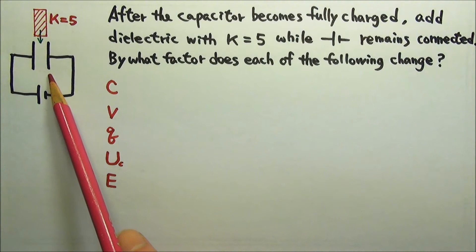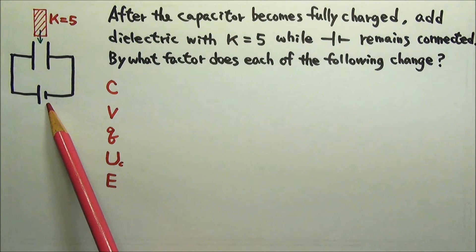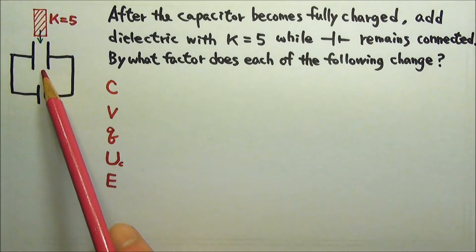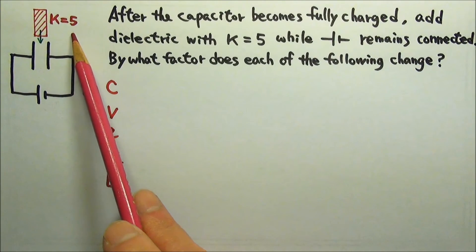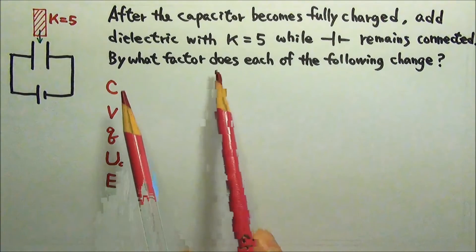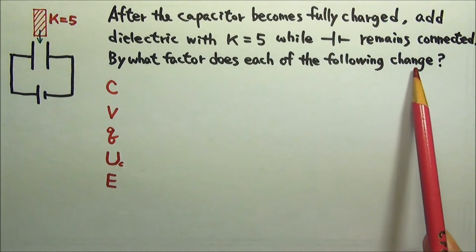A parallel plate capacitor connected to a battery becomes fully charged, and then the space between the plates is filled with a dielectric material with a dielectric constant of 5, while the battery remains connected. By what factor does each of the following change?